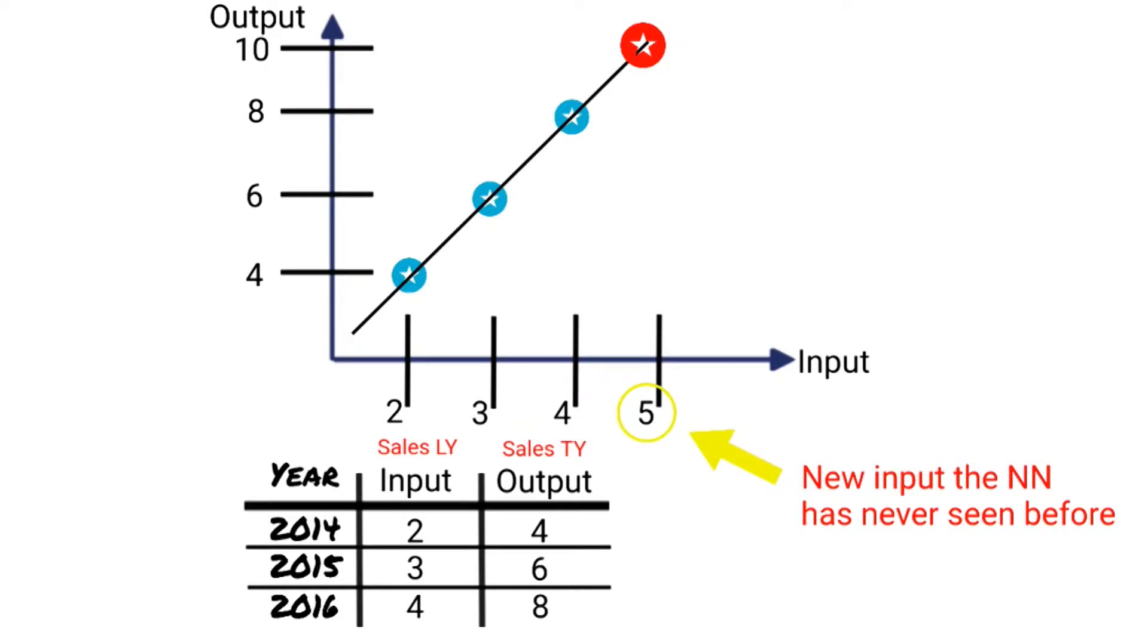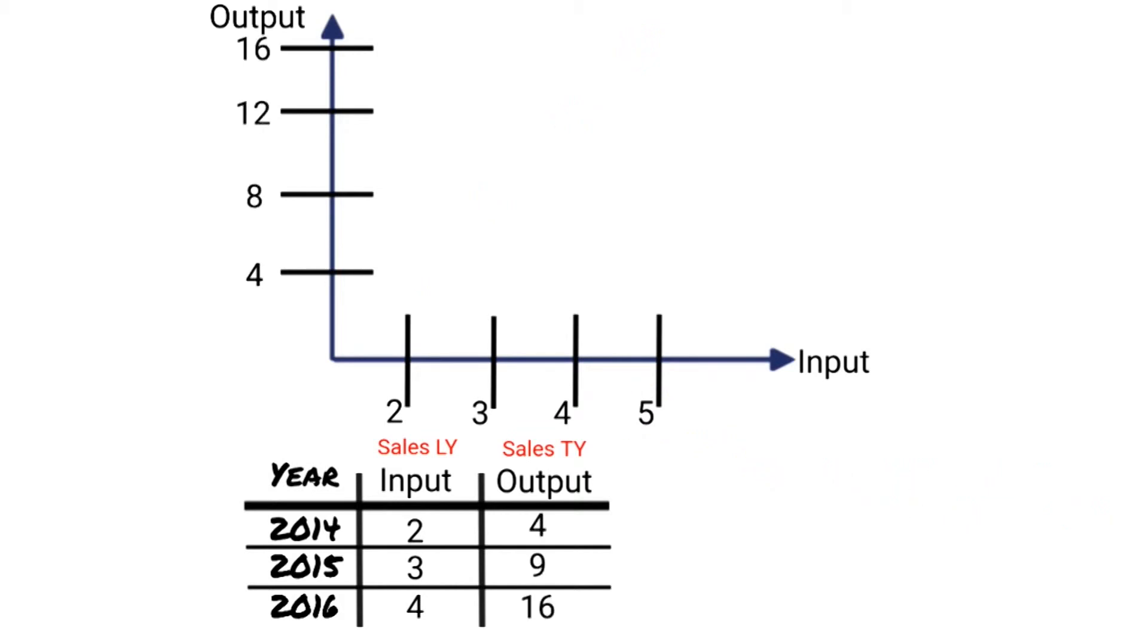In this example, we're using sales just to give it some context here. So hopefully that explains why those weights are important and how they're used to make predictions. But now, let's make our data set a little more complex. So instead of our output simply being double our input, let's make it exponential.